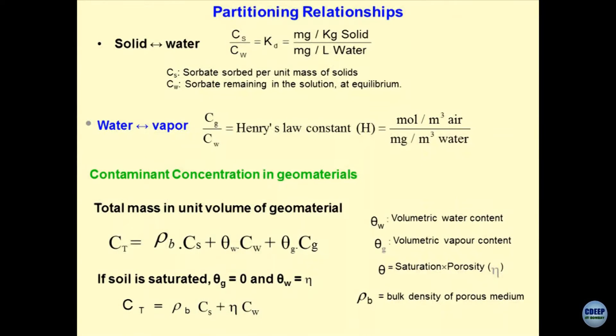Cg is the concentration of the gas which is getting sorbed on the solids divided by the concentration of the sorbate which is remaining in the liquid phase. We have solid-water or we have water-vapor, two types of interaction. Then you can compute the total mass per unit volume of the geomaterial. Theta w is the volumetric moisture content, theta g is the volumetric vapor content. This gets converted into the concentration of the solids and concentration which remains in the water solution. This is how the partitioning is defined.